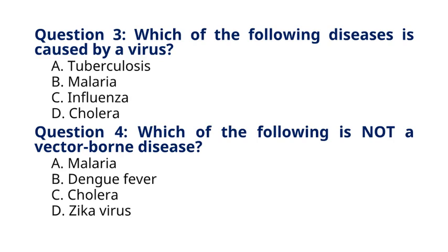Question 4: Which of the following is not a vector-borne disease? A. Malaria, B. Dengue fever, C. Cholera, D. Zika virus. The correct answer is option C, Cholera. Explanation: Cholera is primarily transmitted through contaminated water or food and is not spread by vectors such as mosquitoes or ticks.